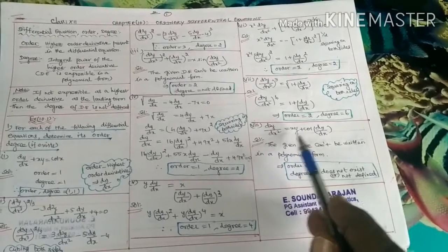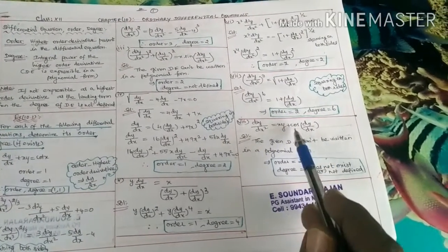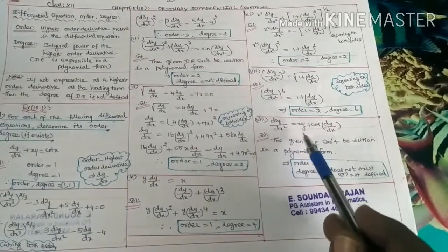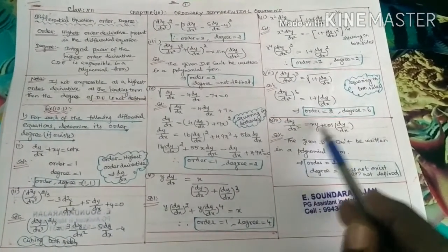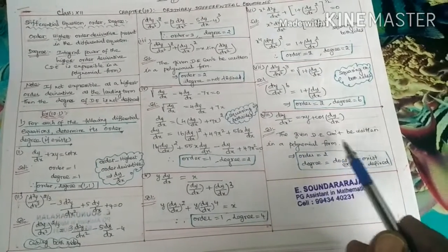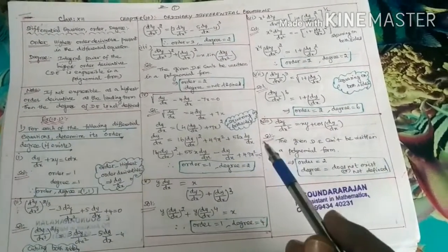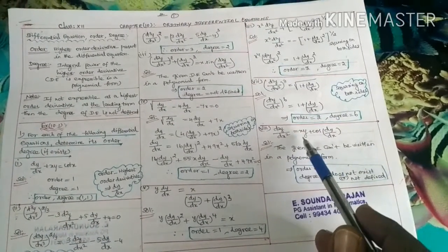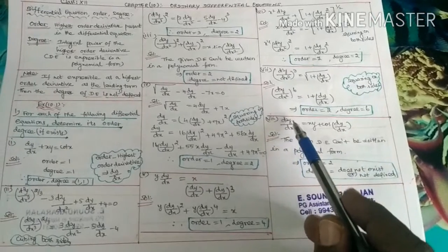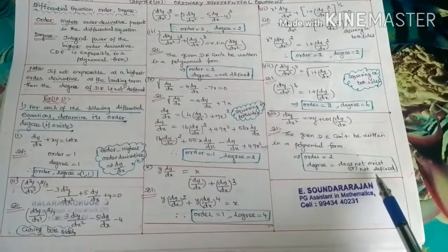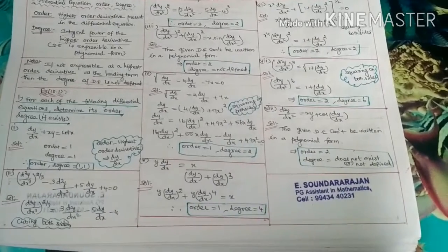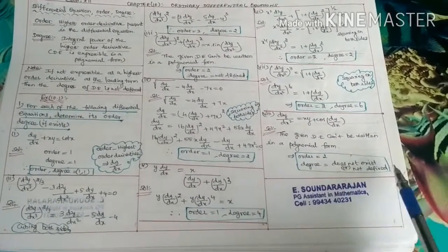Eighth question: d²y/dx² = xy + cos(dy/dx). The given differential equation cannot be written in polynomial form because the right-hand side contains cos(dy/dx), which is a transcendental function of the derivative. Therefore, order = 2 (highest derivative is d²y/dx²), and the degree does not exist — it is not defined.